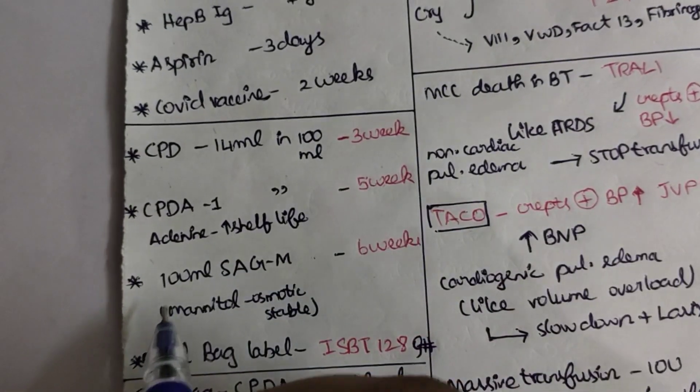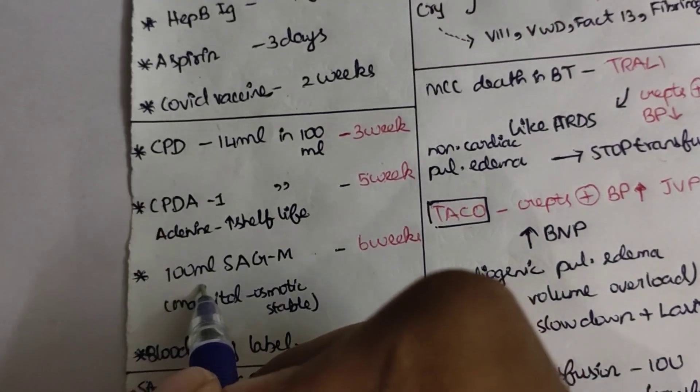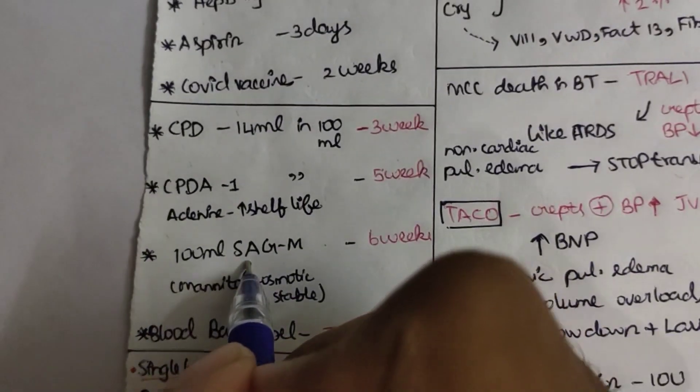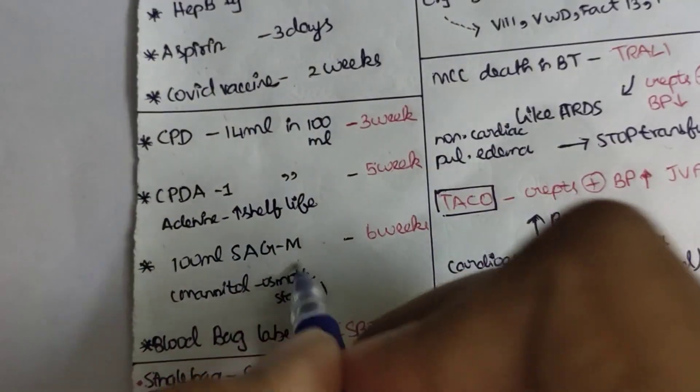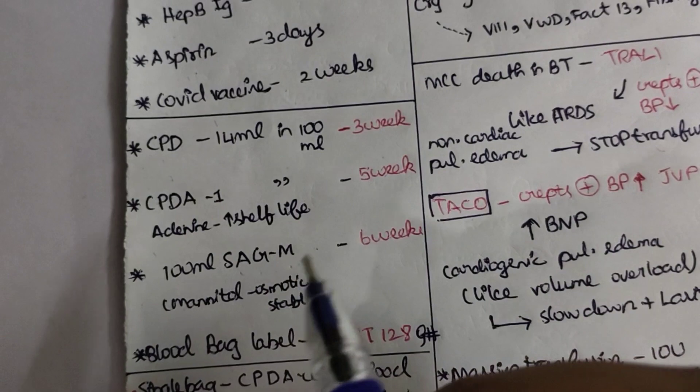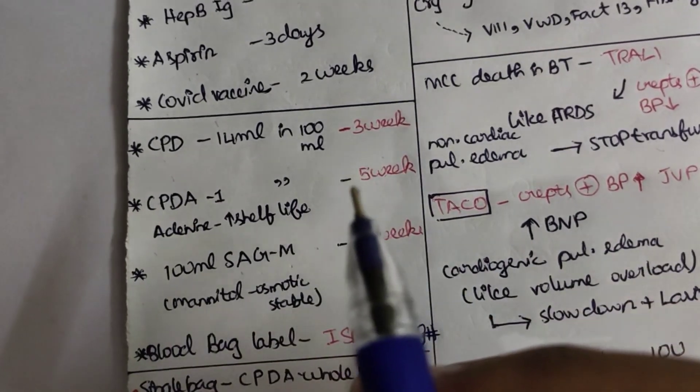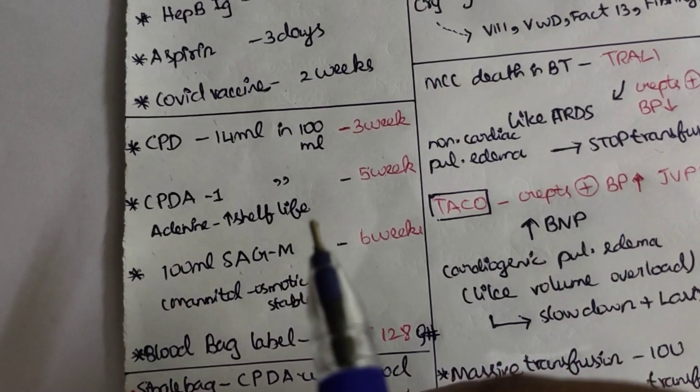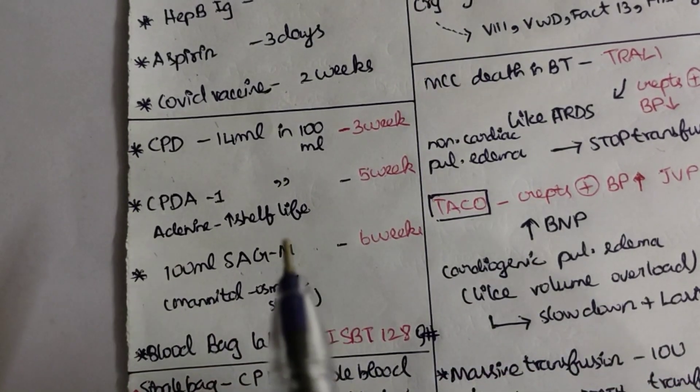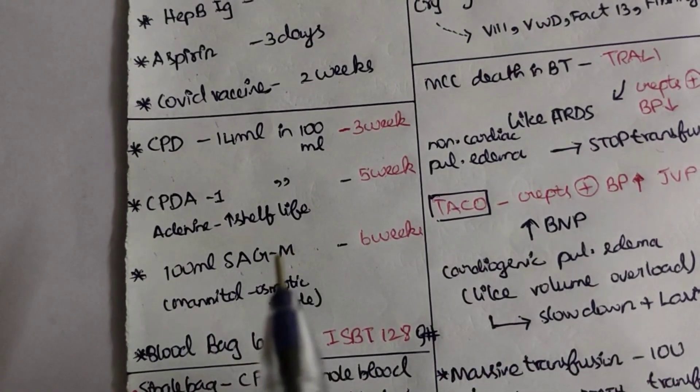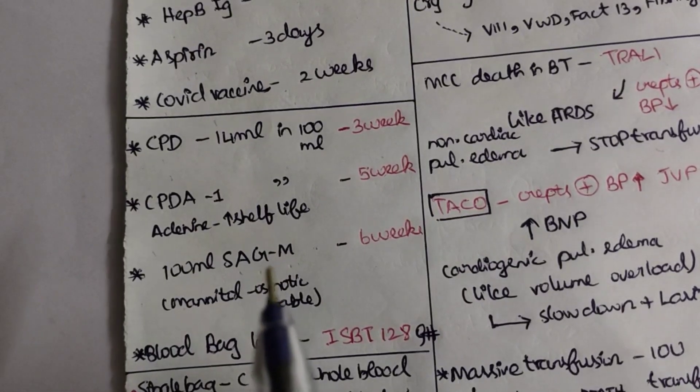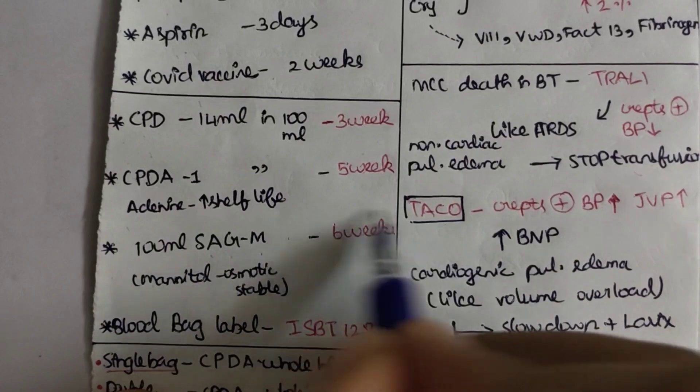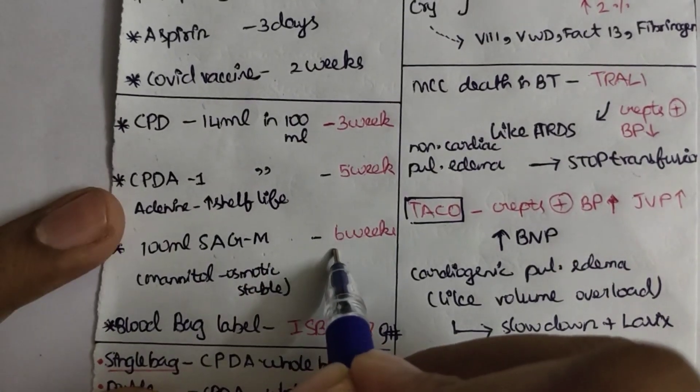Next, if we add 100 ml of SAGM - S for saline, A for adenine, G for glucose, M for mannitol - it plays an important role in maintaining osmotic stability for those RBCs and certain other cells, decreasing the fragility or hemolysis inside the blood bag, thereby increasing the shelf-life up to six weeks.